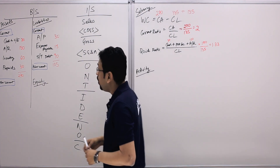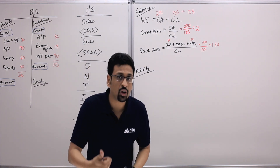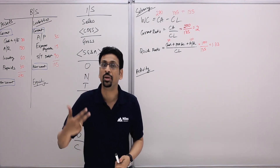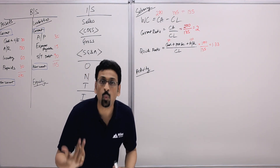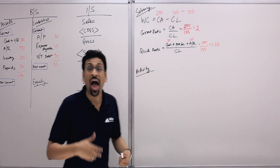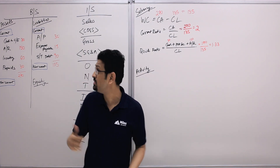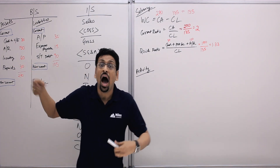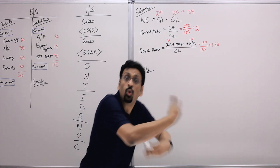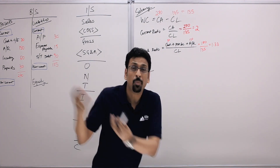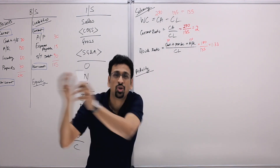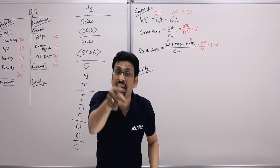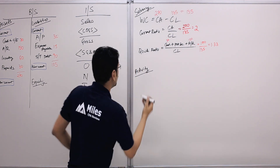Under activity ratios we look at inventory turnover, receivable turnover, and payable turnover. Inventory turnover measures how active the business is with its inventory — how soon is it able to turn over its inventory. Buy goods, sell goods, buy goods, sell goods — how fast can it do it? That's inventory turnover.